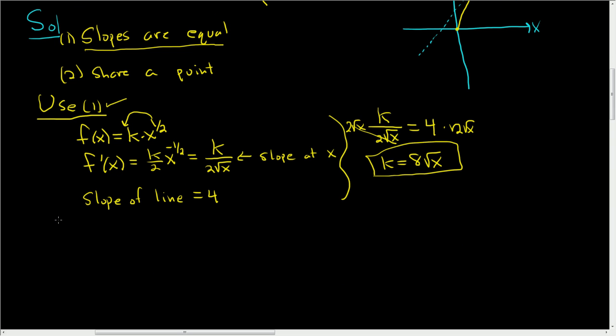So let's use condition 2. In particular, they share a y-coordinate. So f of x was k square root of x. And y is 4x plus 4. So if they share a y-coordinate, then k square root of x has to be equal to 4x plus 4. The y-values must be the same. This is y. So we're just basically setting them equal to each other.